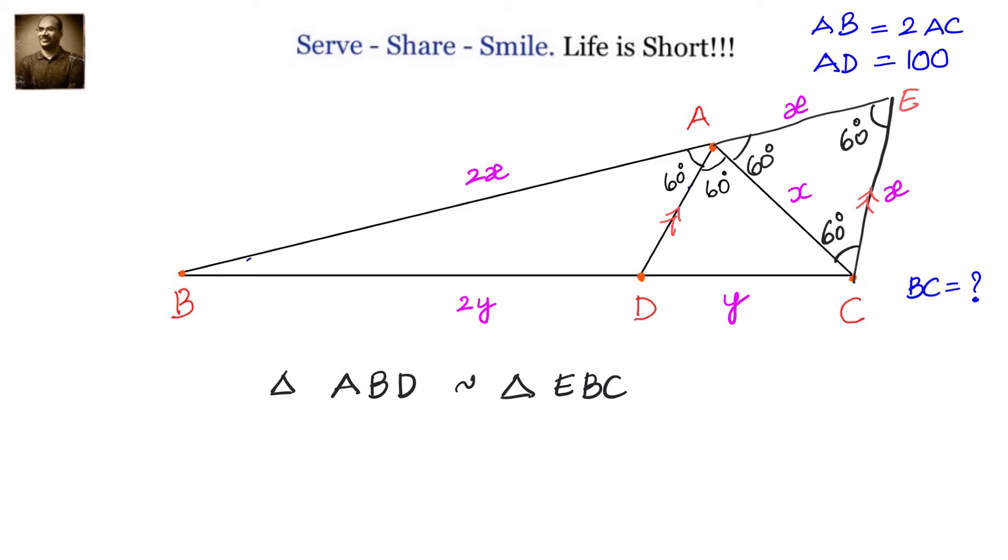AA similarity criteria because we have angle B common and we have one angle which equals 60 degrees in BAD and BEC.